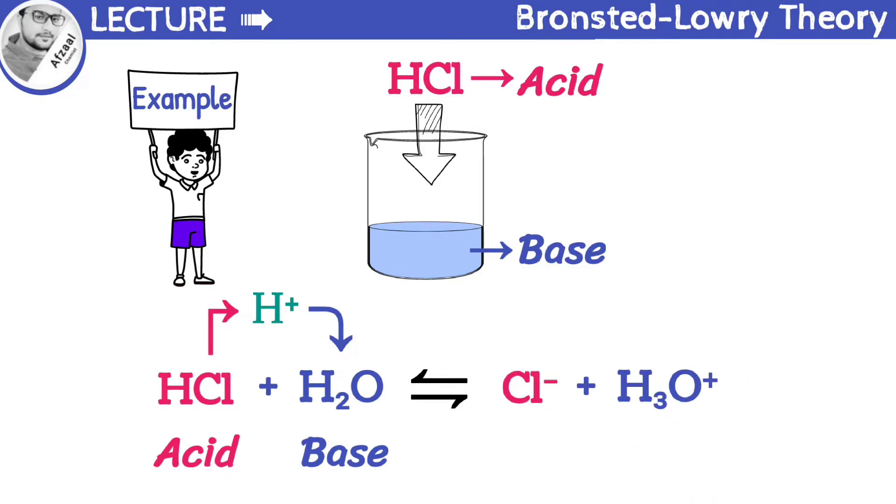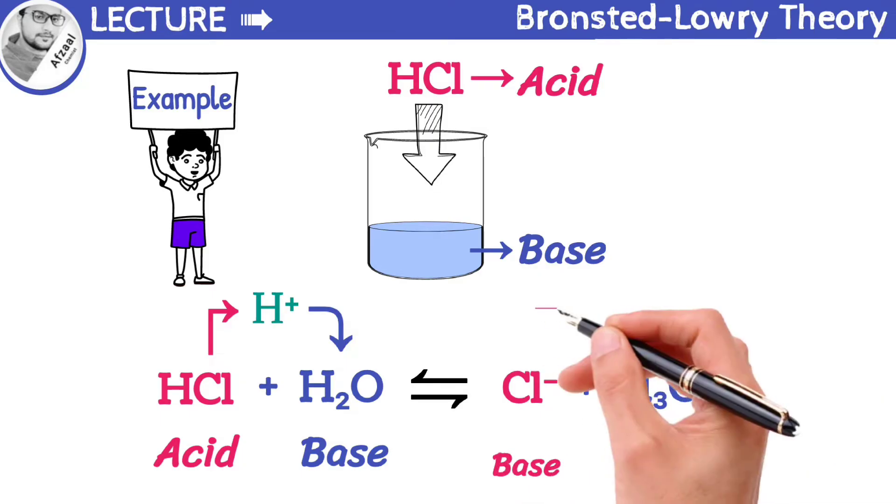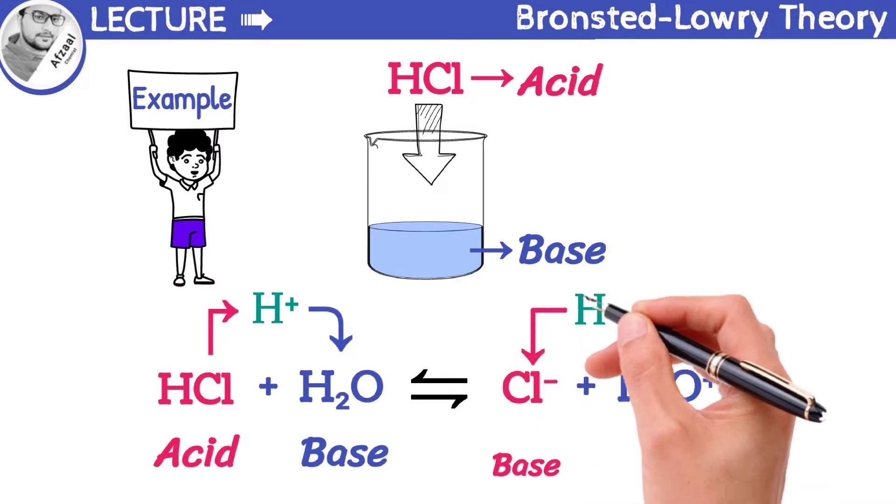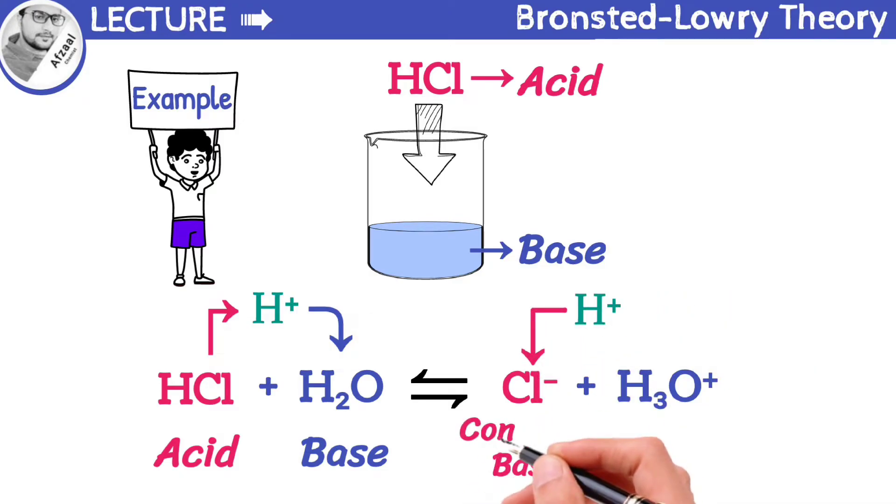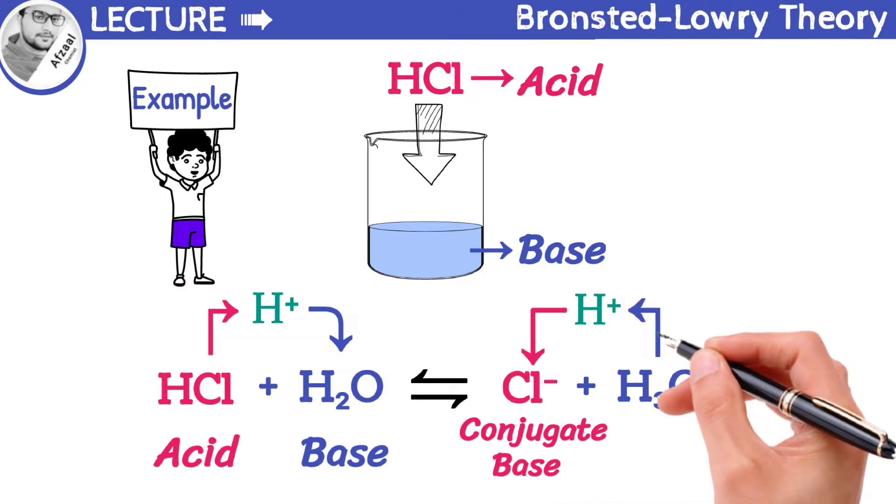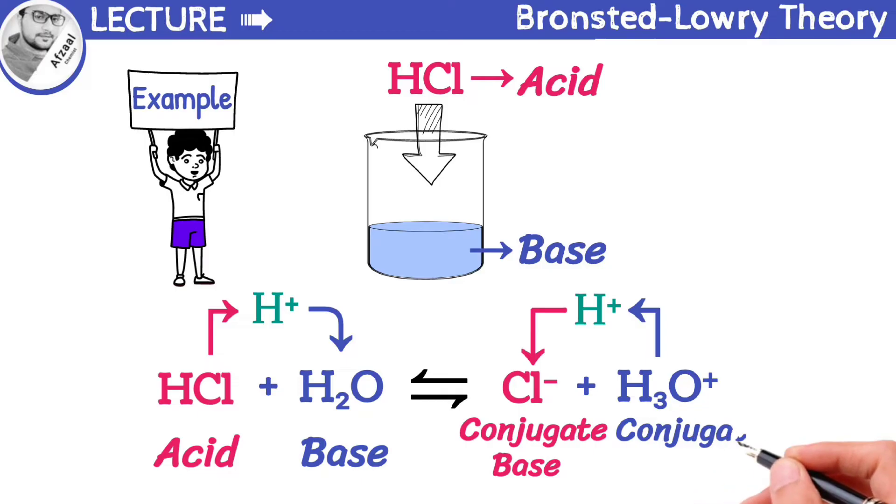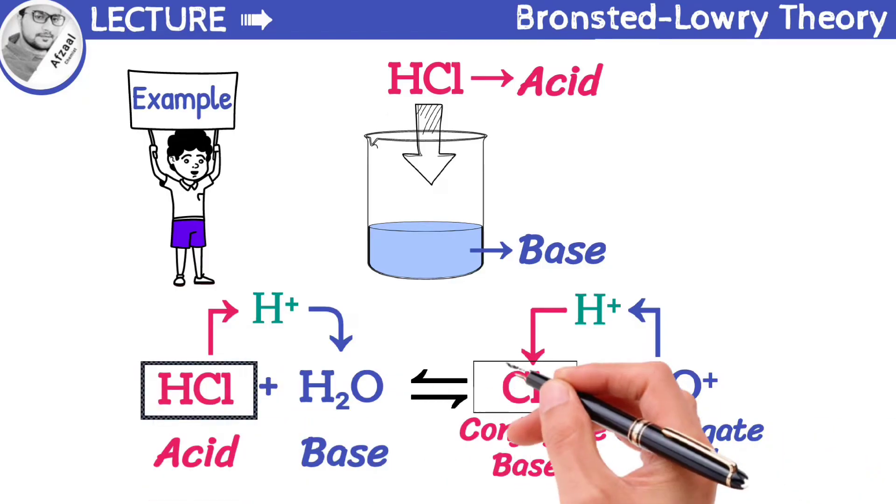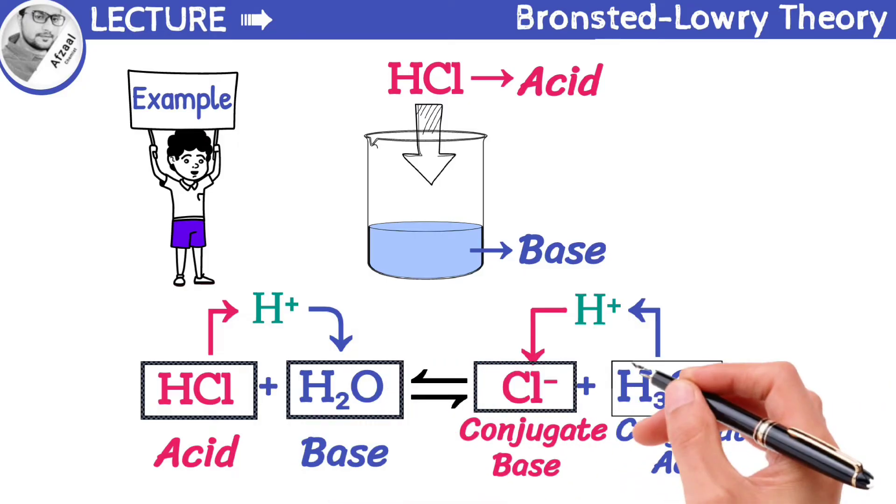In the reverse reaction, chloride ion is a base as it can accept a proton from acid known as conjugate base of acid. Hydronium ion is called conjugate acid of base because now it can donate a proton. It means every acid produces conjugate base and every base produces conjugate acid.